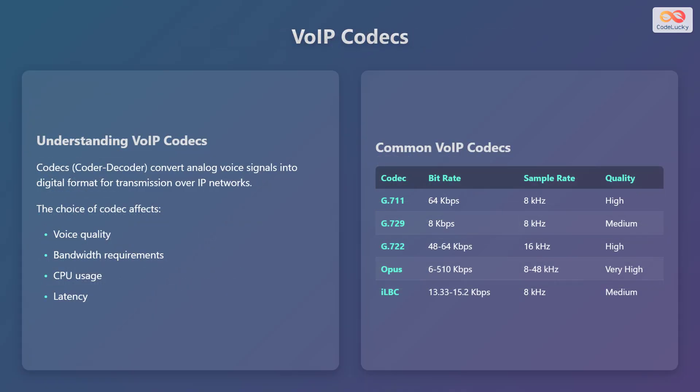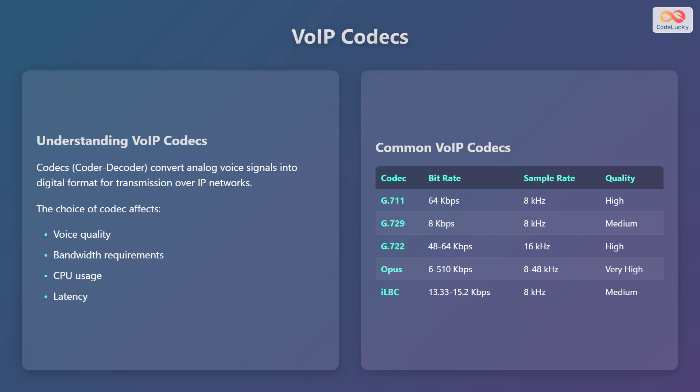VoIP codecs — short for coder-decoders — are essential for converting analog voice signals into a digital format suitable for transmission over IP networks. The choice of codec has a significant impact on voice quality, bandwidth usage, CPU usage, and latency. Different codecs offer various trade-offs between these factors, so selecting the right one is crucial for optimizing VoIP performance.